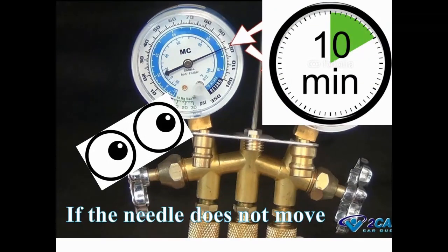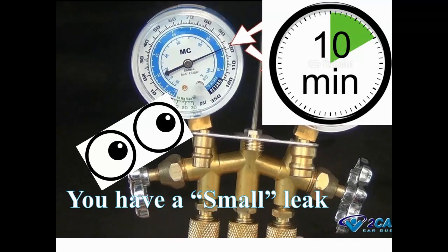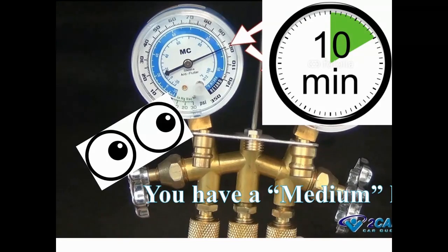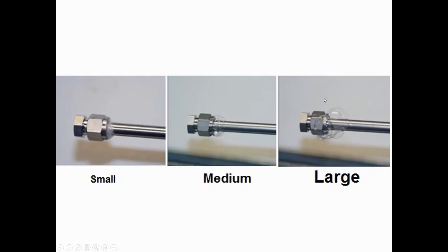The next category: you put in 100 PSI and one minute later it barely lost any. If the needle doesn't move or barely moves — barely means like one or half a pound — guess what size leak you have: a small leak. If the needle moves, big leak; if it doesn't move, small leak. Of course you have a leak — the vehicle came in near empty. Here's how we split the hairs for the medium leak: if you drop 10 PSI in 10 minutes — basically a pound a minute — you now have a medium leak. The bubbles work great on big, they work good on medium, but bubbles usually will not find the small leak.